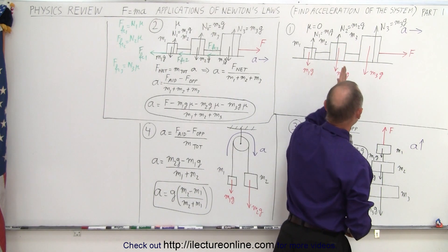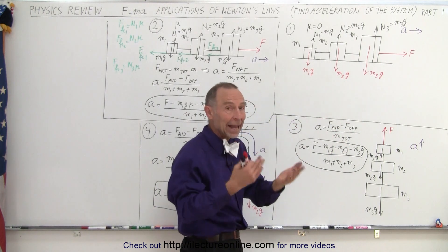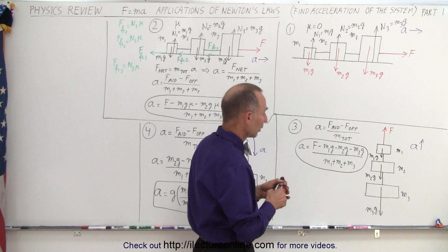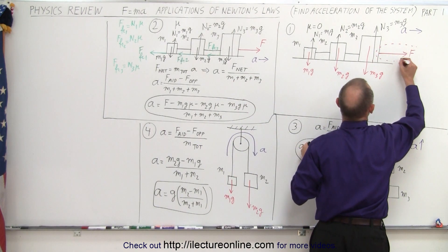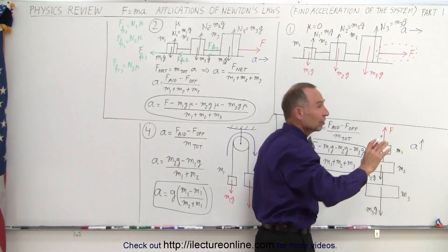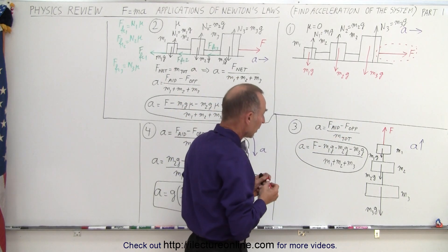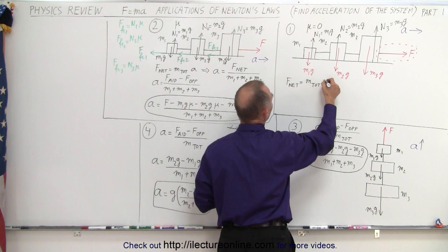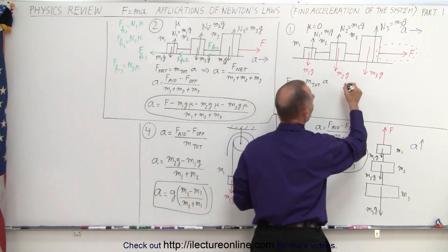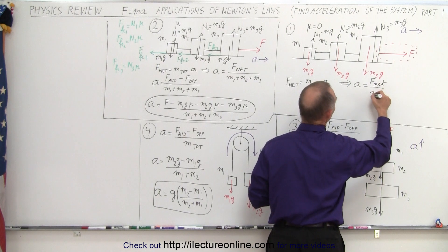These forces act perpendicular to the assumed acceleration, so they can neither add nor detract from that acceleration. The only force left that can actually influence the acceleration is the applied force. We know that F-net, the net force acting on a system, equals the total mass of the system times its acceleration, which implies that acceleration equals the net force divided by the total mass.